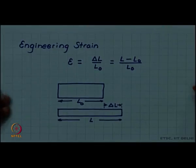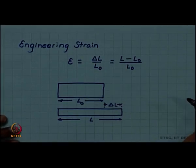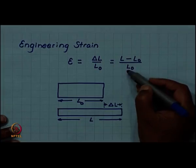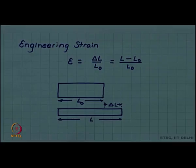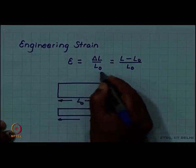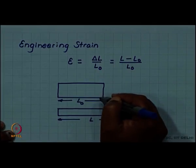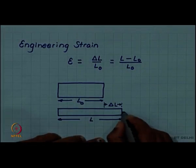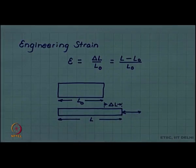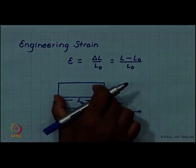Now we look at the engineering strain, which is defined as delta L by L naught, or L minus L naught by L naught. You can see that the engineering strain depends on what is the original length. If delta L was the increment over original length L naught, I get the engineering strain delta L by L naught. But suppose I increment it by a further delta L — this increment also will be divided by the original length L naught.